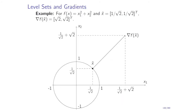Let's illustrate this for the function x1² + x2². Consider a point on the level set at level 1 — say x̃ = (1/√2, 1/√2). We compute the gradient of f at this point, which gives (√2, √2). If we draw this vector originating at x̃, we can see that the gradient is orthogonal to the level set. Drawing the tangent line to the level set at this point, we can clearly see the orthogonality.